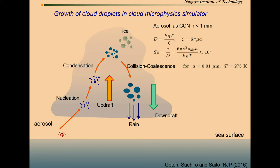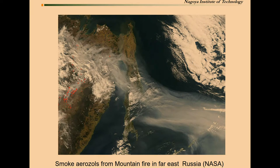If we treat the distribution of aerosols as a continuum, we may estimate the diffusivity of these aerosols. The typical size of the aerosols is less than about 0.01 micrometers. By using the Einstein formula, we have this estimate for the Schmidt number, about 10,000. It's quite large. This is an example of a snapshot of the smoke aerosol from mountain fire in the far east. This smoke aerosol can be nuclei of cloud condensation.